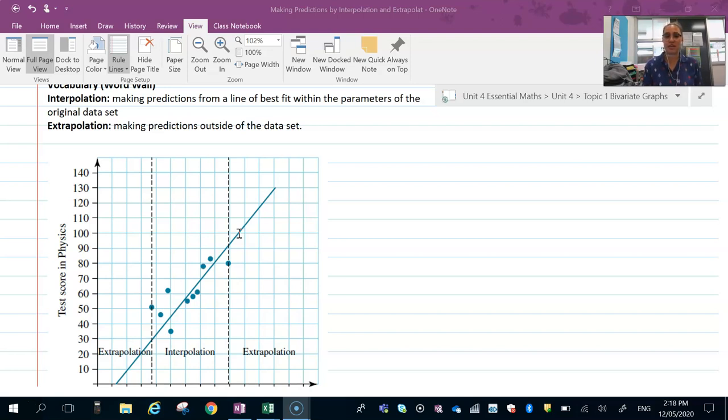If we extrapolate, we can go below the last point or above the highest point, and that's when you make predictions outside of the graph.